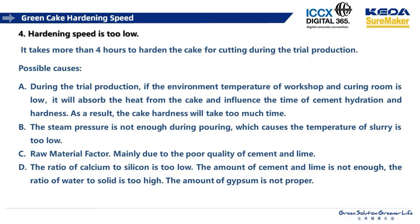Another factor to consider is insufficient steam pressure during pouring, which causes the slurry temperature to be too low. Also, we should check the raw material — if the ratio of calcium to silicon is too low, the ratio of water to solid is too high, or the amount of gypsum is not proper, these are also possible causes of slow hardening.